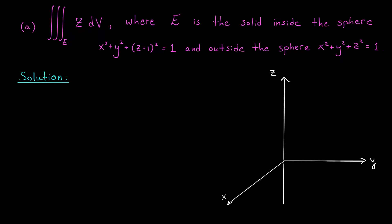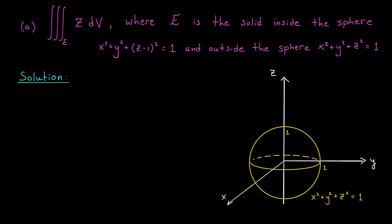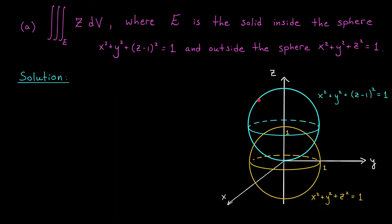We'll start with the easier equation: the sphere x squared plus y squared plus z squared equals 1. This is our usual unit sphere, centered at the origin with radius 1. What about our other sphere? The equation looks almost the same, except instead of z, we now have z minus 1. This means our new sphere has been shifted along the z axis — it's centered at the point (0, 0, 1), not at the origin. It still has a radius of 1. The solid E lies inside the blue sphere but outside the yellow sphere, so the yellow sphere carves out a chunk from the bottom of the blue sphere. We're interested in the stuff that lies above their intersection.